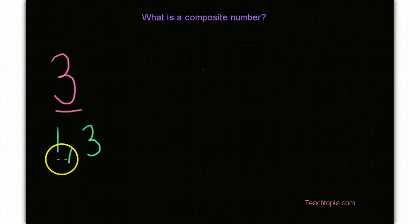Three is divisible by one and three. Well, any other numbers? Nope. So it's not a composite number because a composite number is divisible by more than just the number itself and one. So three is not an example of a composite number. So let's go ahead and cross that out.